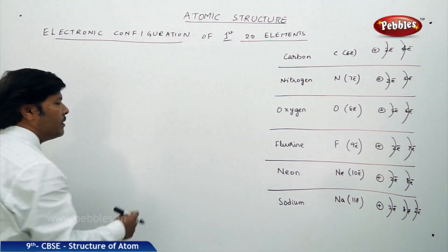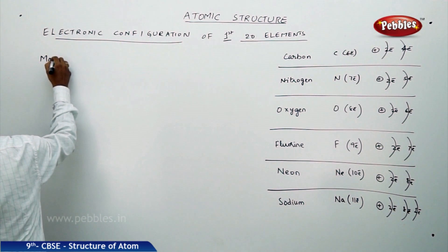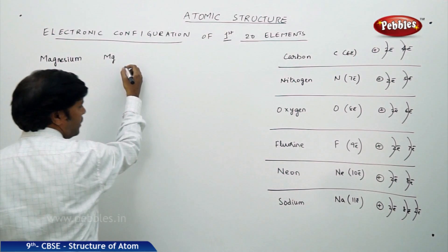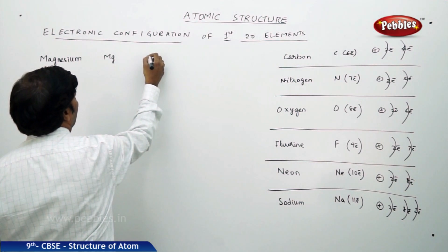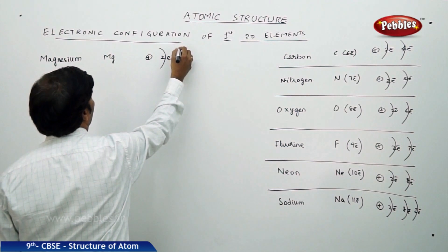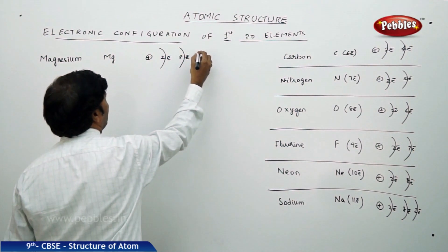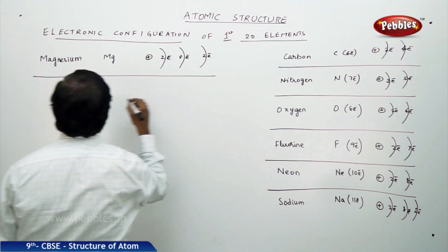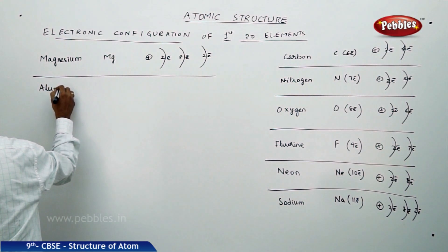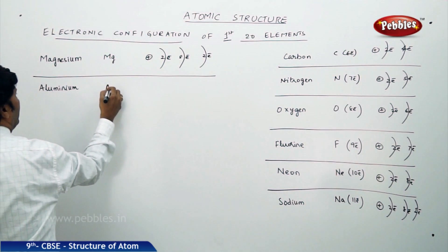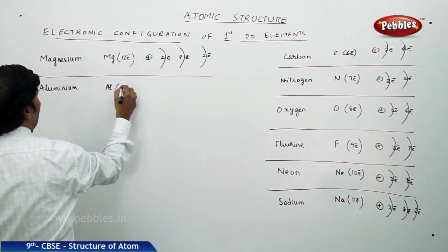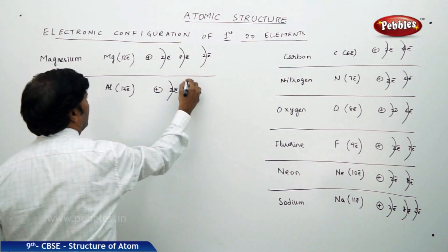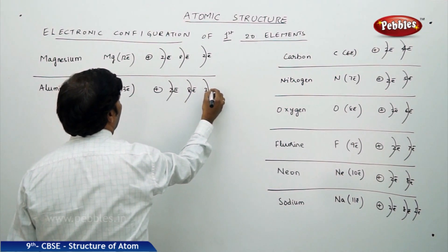Magnesium, symbol Mg, has 12 electrons: nucleus, first orbit 2 electrons, second orbit 8 electrons, third orbit 2 electrons. Aluminium has 13 electrons: nucleus, first shell 2 electrons, second shell 8 electrons, third shell 3 electrons.